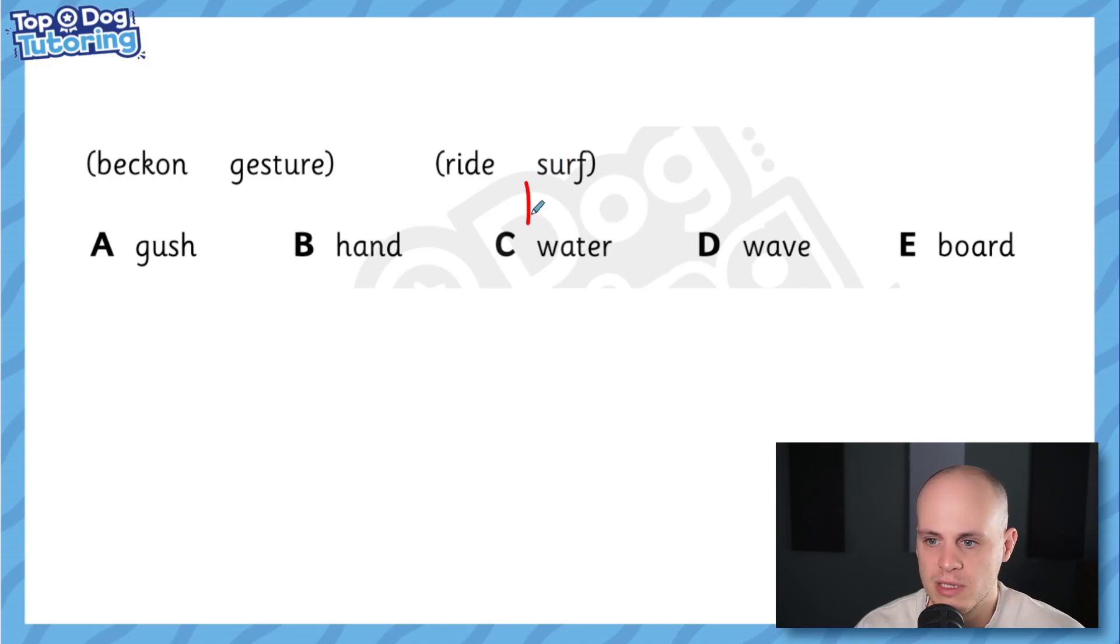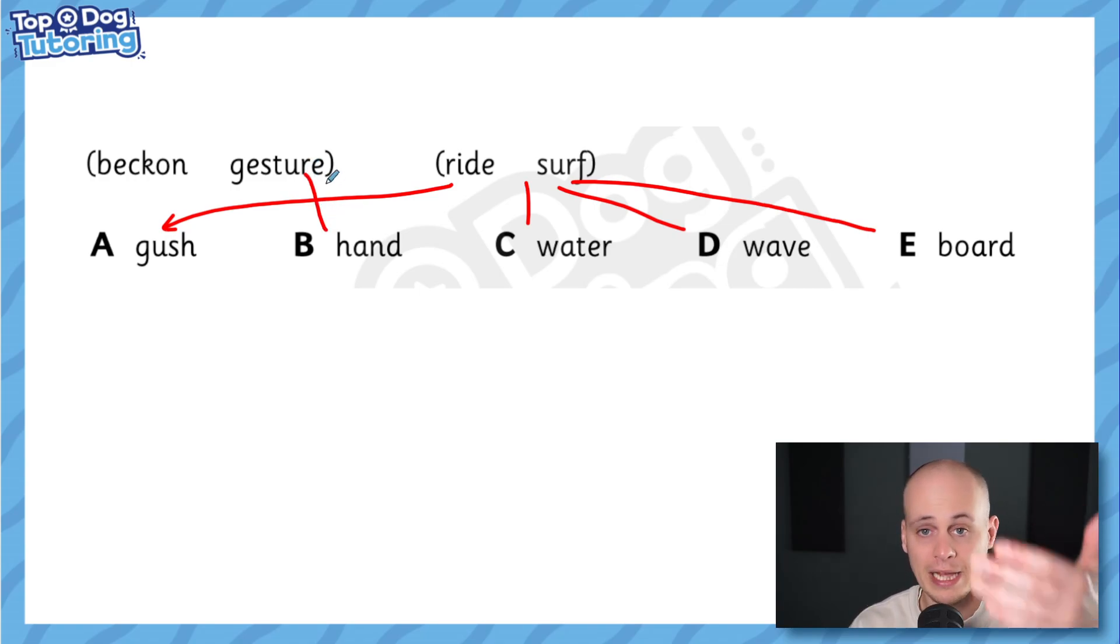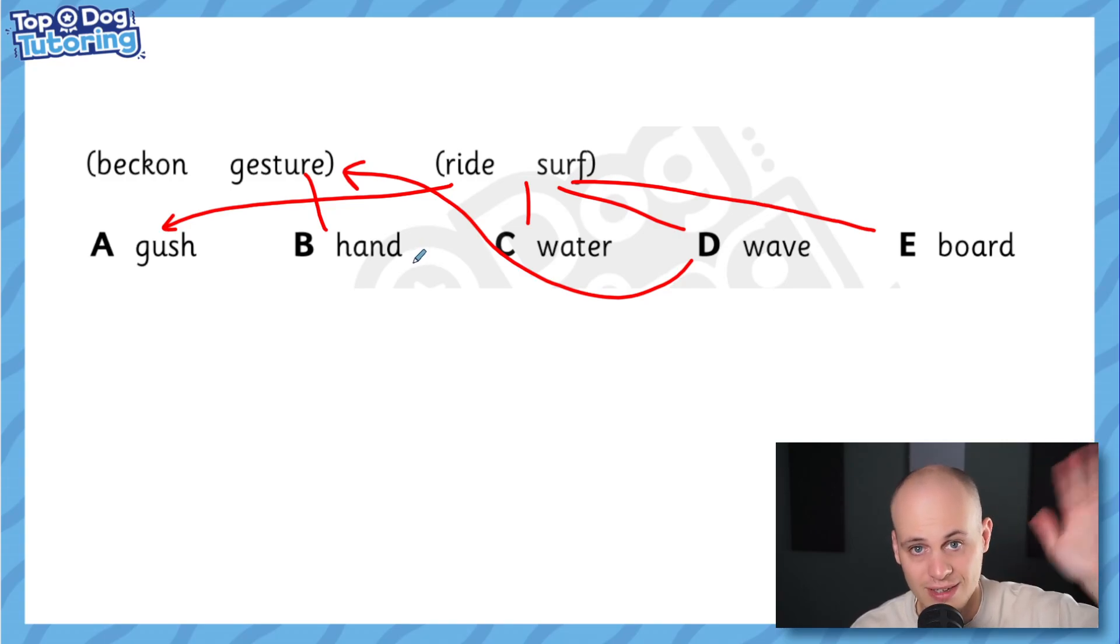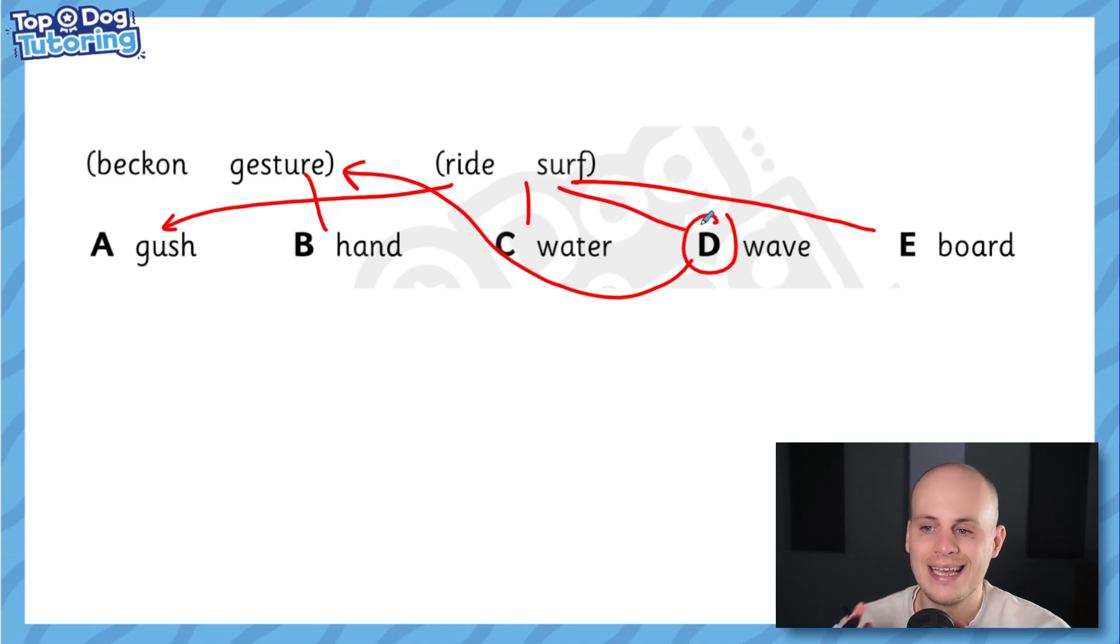What does ride and surf make me think of? That makes me think of water. It makes me think of gush, like gushing water. That's like a huge amount of water. It makes me think of wave. It makes me think of board. In fact, most of these words go really well with ride and surf. Now beckon and gesture makes me think of hand because you quite often gesture or beckon with your hand. Like you do this. It means like come over here. I'm beckoning over. But what else goes with it? Well, the only other word that goes well with beckon and gesture is wave, because waving at someone is a type of beckon or a type of gesture. Like hello, I'm waving at you with my hands. So we've revealed the answer, haven't we? Because wave is a homophone. Wave can both mean to beckon or to gesture as a type of beckon or gesture. And it also goes really well with the category of riding and surfing. You might ride the wave or surf the wave. So there's our answer.